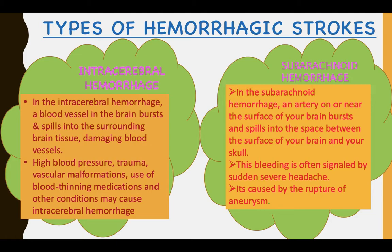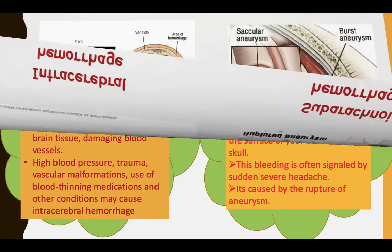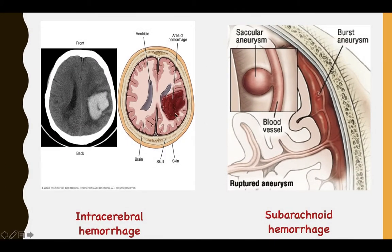In subarachnoid hemorrhage, an artery on or near the surface of your brain bursts and spills into the space between the surface of your brain and your skull. This bleeding is often signaled by a sudden severe headache, and it is caused by the rupture of an aneurysm. A picture of intracerebral hemorrhage and subarachnoid hemorrhage is shown here.